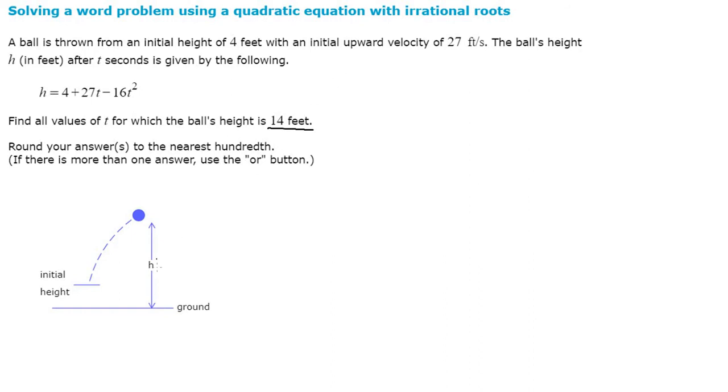As it was mentioned, h is equal to the height is equal to 14 feet. We're going to find the t which is the number of seconds when the height is 14 feet. So we're going to substitute 14 for h in the equation and say 14 is equal to 4 plus 27t minus 16t squared.